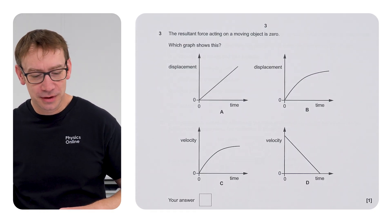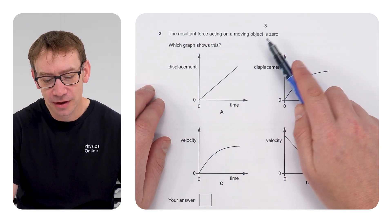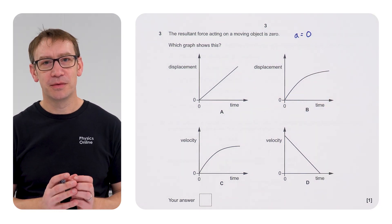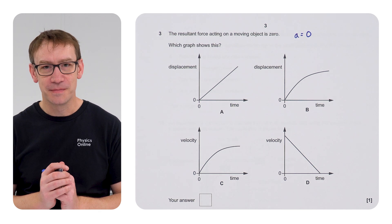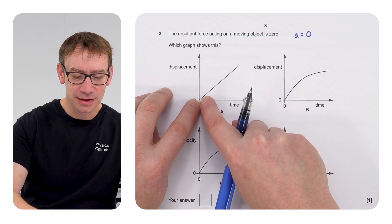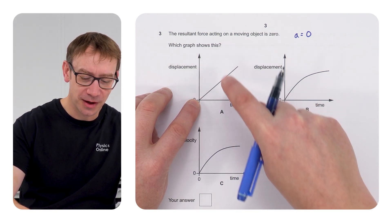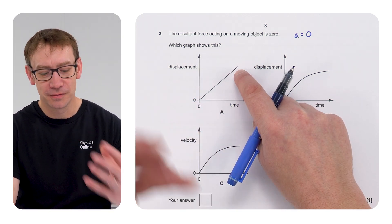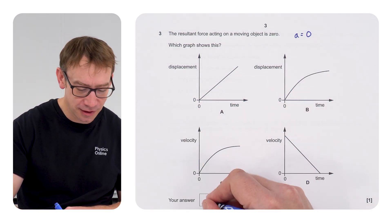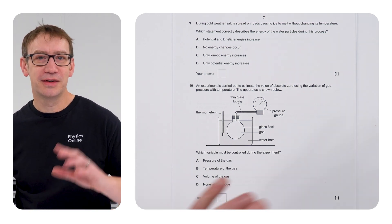The next question is this one here. The resultant force acting on a moving object is zero. If there's no resultant force that means the acceleration is going to be zero, and therefore we must have something moving at a constant velocity. Looking at these, we've got a constant gradient on this displacement time graph where the gradient is equal to the velocity. We've got a constant gradient, constant velocity, and therefore the acceleration is zero, so here the answer is A. Again, a GCSE level question asked at A level.